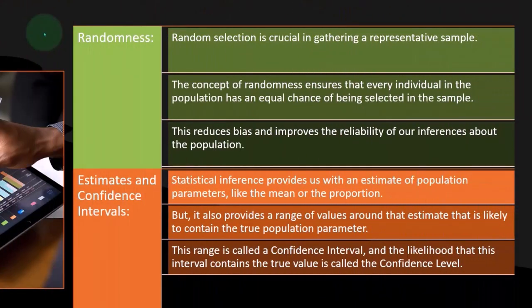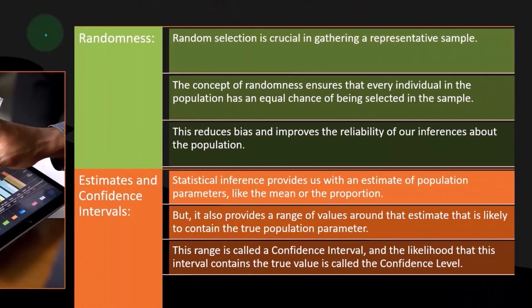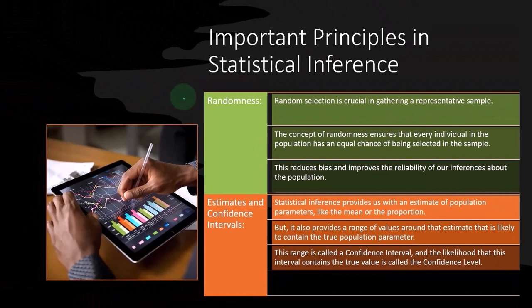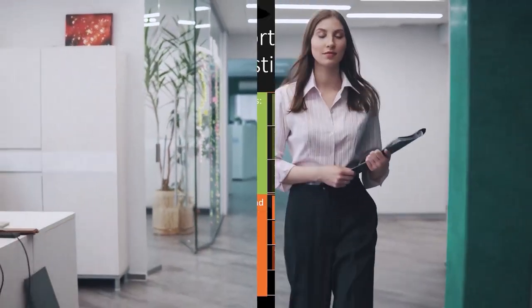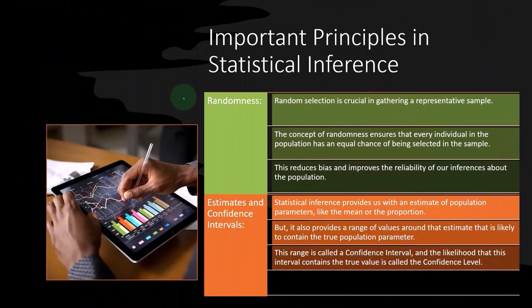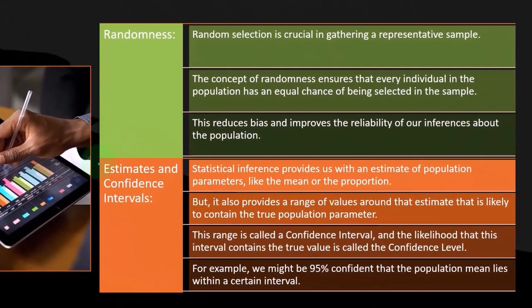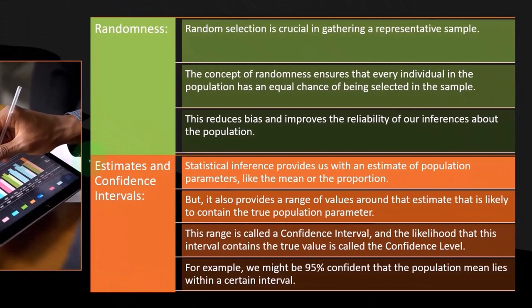That gets to be a more nuanced question. We would like to lock that down as much as possible mathematically, because the level of confidence will give us a lot more predictive power in the future. For example, we might be 95% confident that the population mean lies within a certain interval.